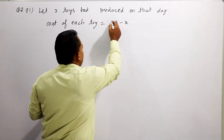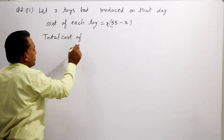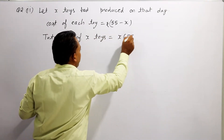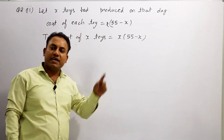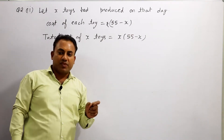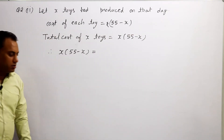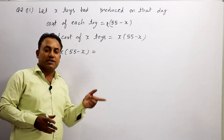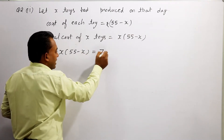तो total cost of x toys is equal to x into (55 minus x). क्यों? कुल toys हमारे पास x हैं, जबकि एक toy की cost 55 minus x है, इन दोनों को multiply कर लेंगे तो total cost मिल जाएगी. लेकिन दिया हुआ है किसी particular day पर total cost 750 है, तो यह 750 के equal हो जाएगा.